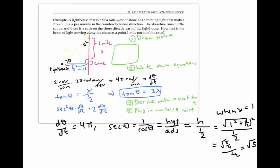So let's plug these values into our equation involving derivatives. And we get the square root of five squared for secant squared times 4π for dθ/dt equals 2 times dx/dt. Solving for dx/dt, we get dx/dt is 5 times 4π divided by 2, or 10π.